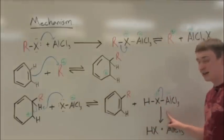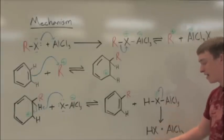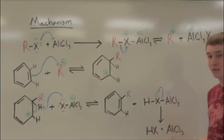Then, the protonated counter-ion will dissociate, giving you hydrogen halide and aluminum trichloride.